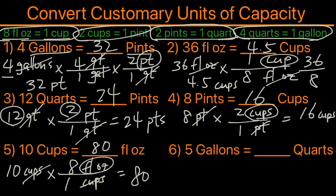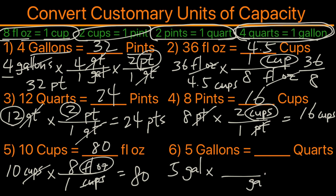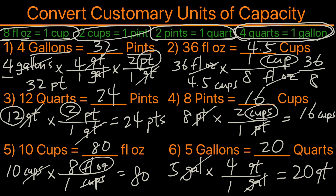For example six, we have five gallons and we're converting to quarts. We write out five gallons with gallons on the bottom and quarts on top. One gallon equals four quarts, gallons cross out, giving us 20 quarts. These six examples show how to convert customary units of capacity — hopefully this is helpful, and thank you for watching.